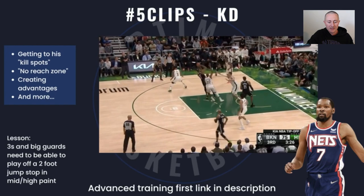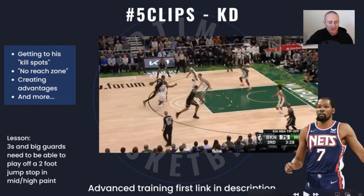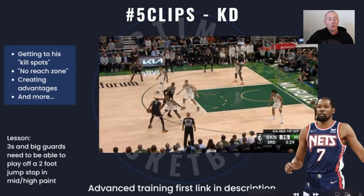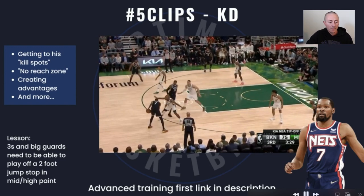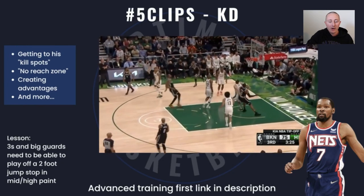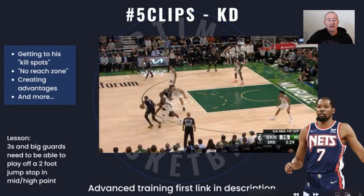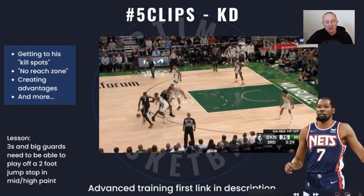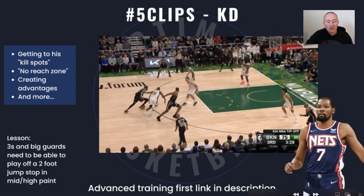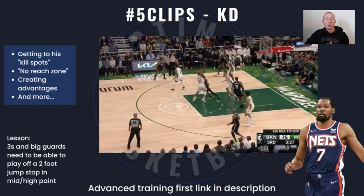Let's watch this first clip against the Bucks. It's a sideball screen, a higher sideball screen. KD gets into the paint on two feet. A lot of players in this situation would come off the ball screen attacking as fast as possible downhill, sprinting, dribbling as fast as they can — out of control, running into the defense.